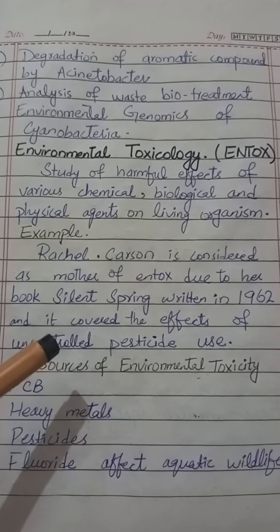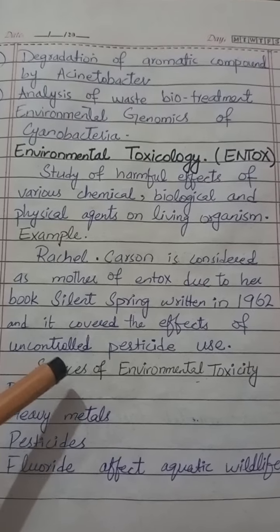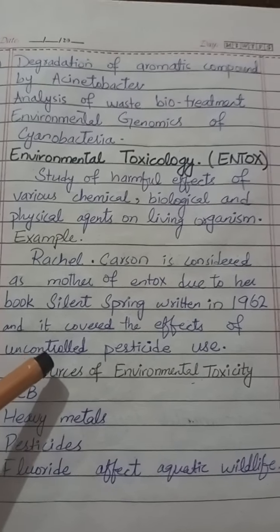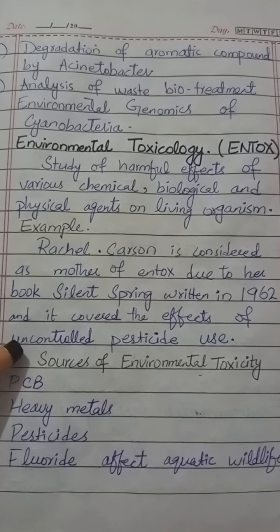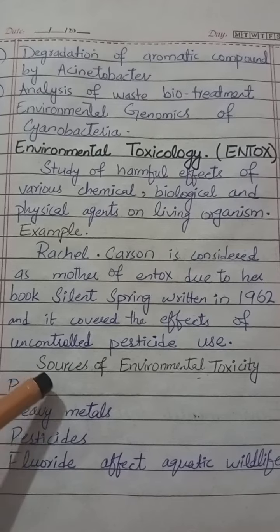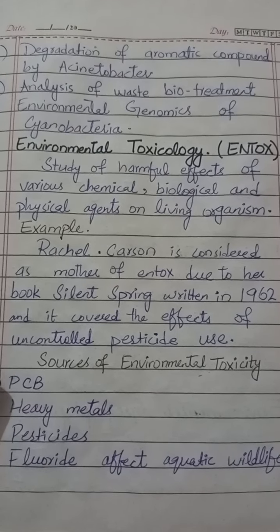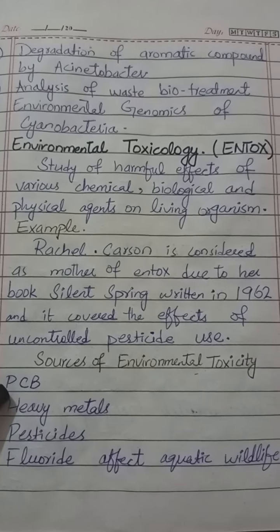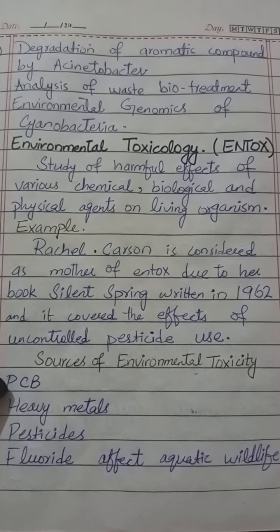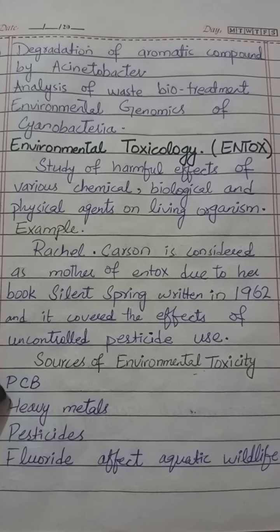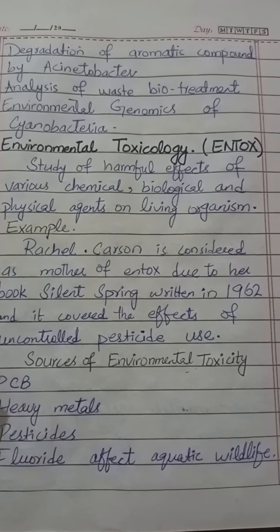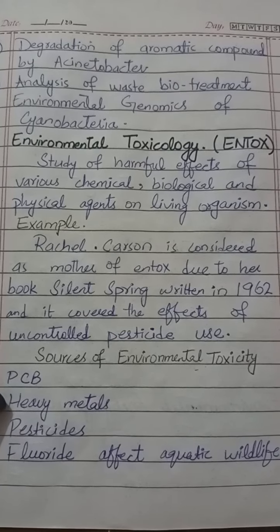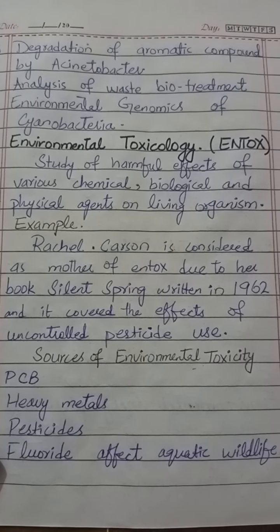When we use many pesticides, what effects are caused — we discussed this. Next are the sources of environmental toxicity: PCBs, heavy metals, pesticides, and fluoride, which affect aquatic wildlife.